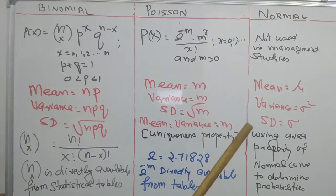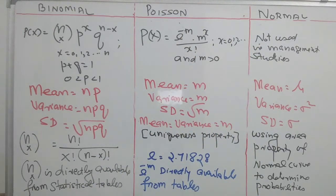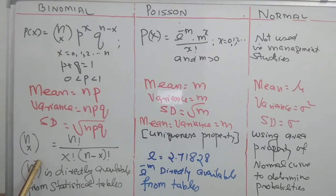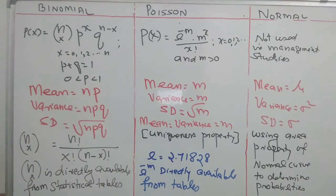For normal distribution, we find probabilities using the area property of the normal curve rather than the probability function. It is a symmetrical curve, and the area property is used to determine probabilities. In binomial, nCx involves n!/[x!(n−x)!], but this complexity is manageable since nCx values are directly available from statistical tables. Similarly, e^(−m) values are directly available from statistical tables.